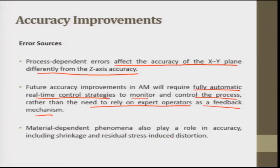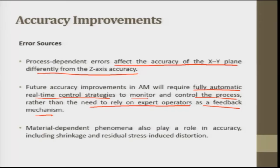With the Internet of Things, people can order customized products from home, the shape can be printed and delivered to them, so expert operators are not needed — computers work by themselves to manufacture the product. Material-dependent phenomena also play a role in accuracy, including shrinkage and residual stress-induced distortion.